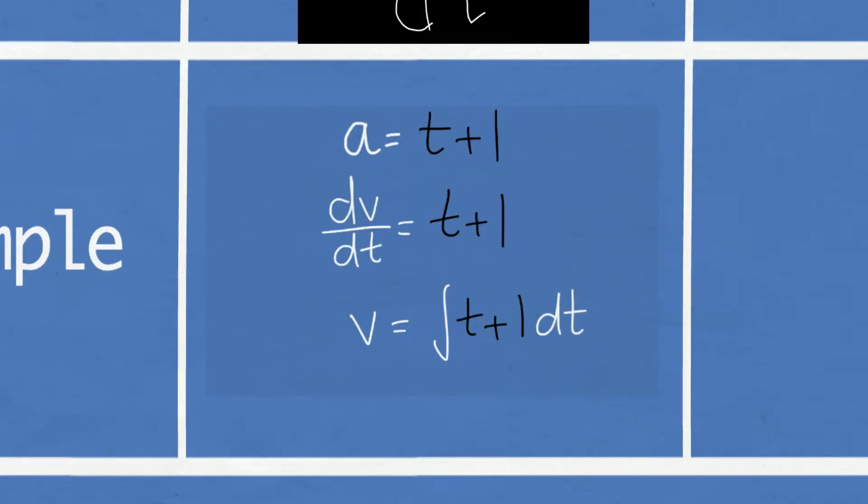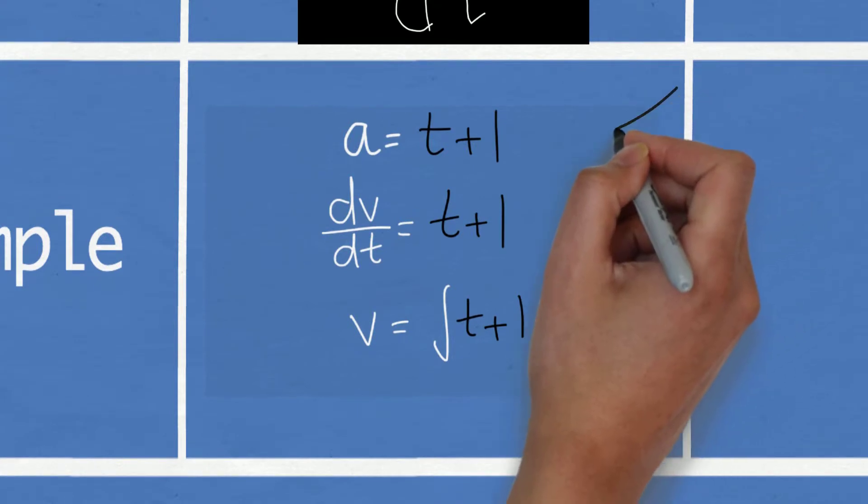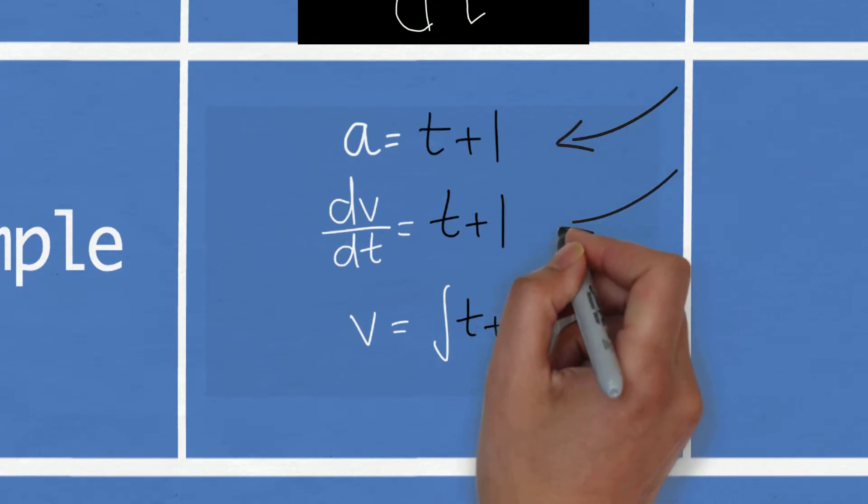An example would be you're given acceleration equals t plus 1 and you are asked to find velocity in terms of time. All you have to do is anti-diff the expression in terms of time and you got it.